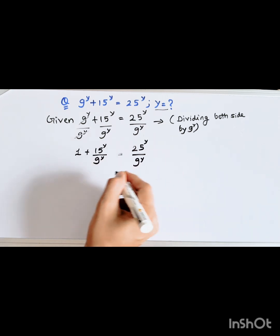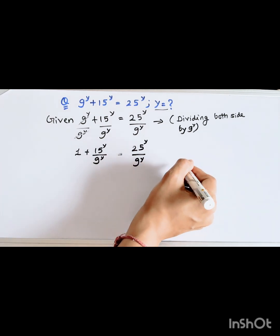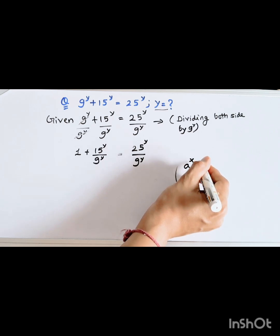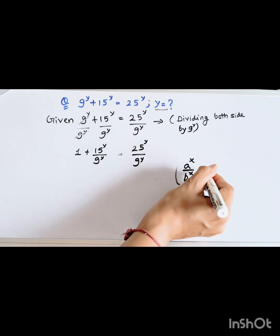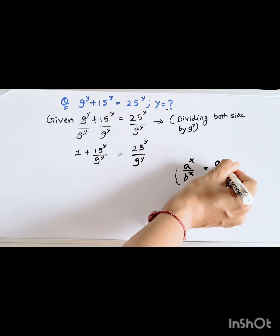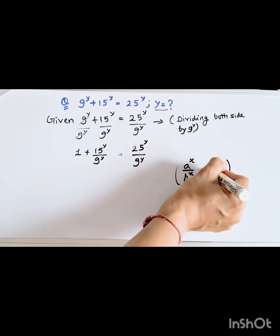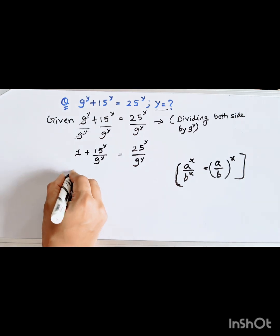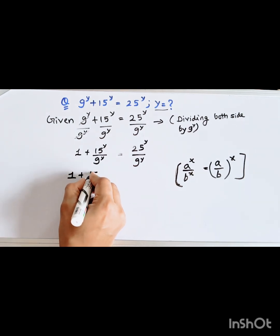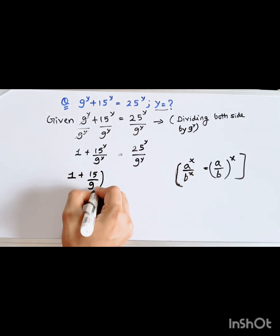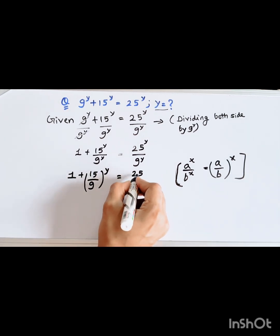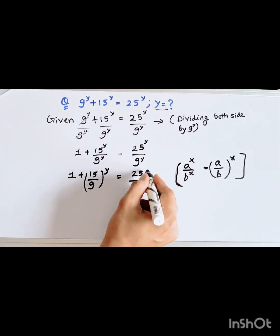Now we use the rule of exponents: a to the power x divided by b to the power x equals (a divided by b) whole to the power x. Applying this rule, we get: 1 plus (15 divided by 9) whole to the power y, equal to (25 divided by 9) whole to the power y.